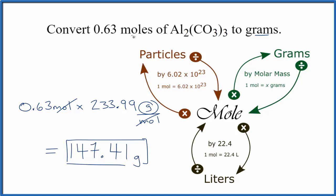If you were given grams and asked to find moles, you'd do the reverse. Take your grams, divide by the molar mass, and that gives you moles of aluminum carbonate.